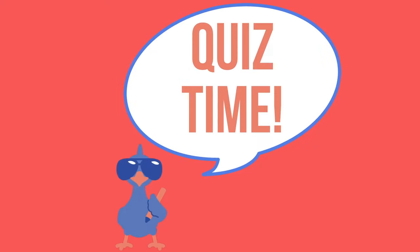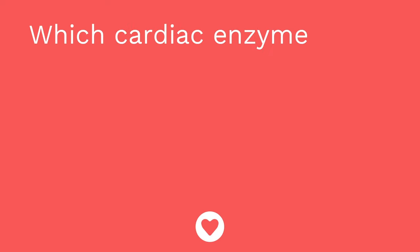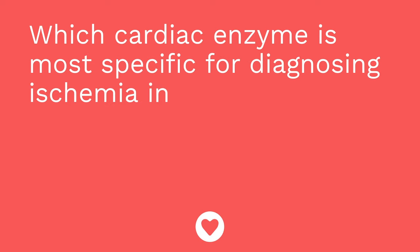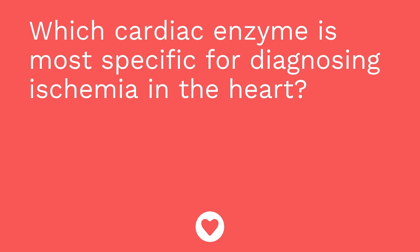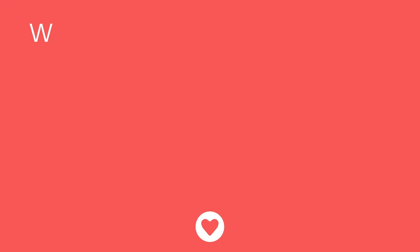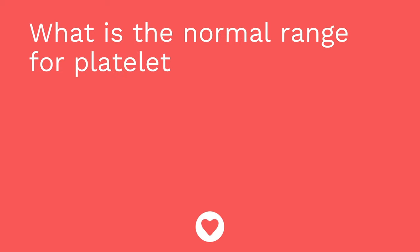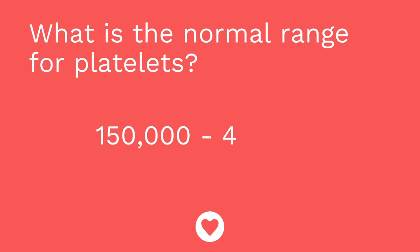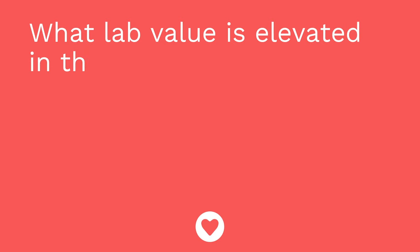I have three quiz questions for you. First: which cardiac enzyme is most specific for diagnosing ischemia in the heart? The answer is troponin. Number two: what is the normal range for platelets? The answer is 150,000 to 400,000. Third question: what lab value is elevated in the presence of a clot? The answer is D-dimer — normally under 0.4, and if elevated, that may be indicative of a clot in the body.